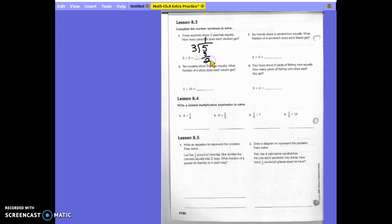It goes in once and we have 2 left over. Take your remainder, put it over your divisor. So they each get 1 and 2 thirds. So you could have also written that as 5 divided by 3 or 5 over 3, and you would have gotten your 1 and 2 thirds.